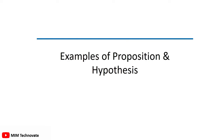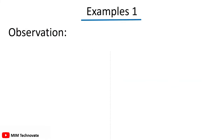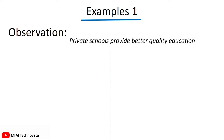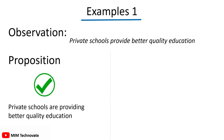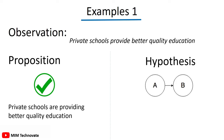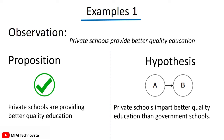Example 1: Let's suppose the observation is that private schools provide better quality education. In the case of a proposition, we will say: private schools are providing better quality education — you can see it is exploring the study phenomenon. In the case of a hypothesis, we will say: private schools impart better quality education than government schools — you can see a testable statement between two measurable variables.